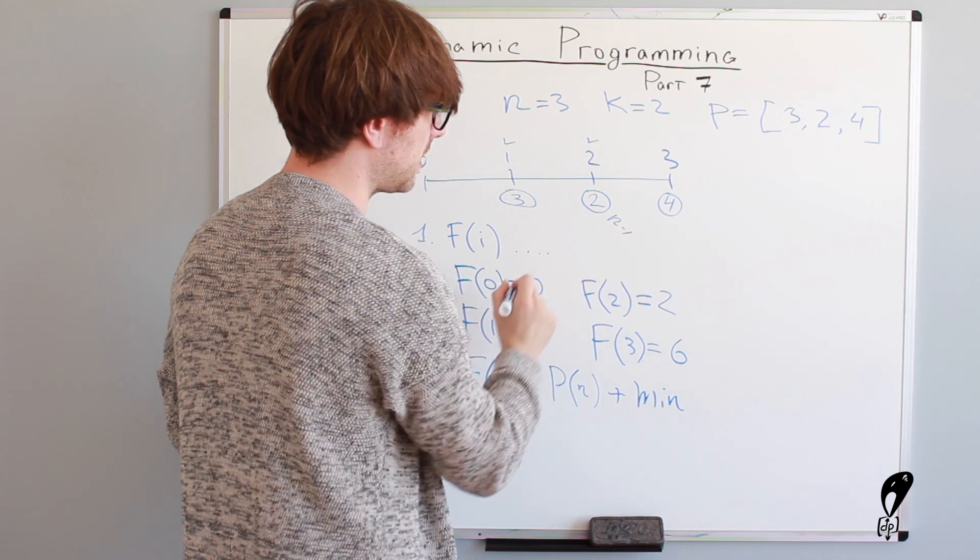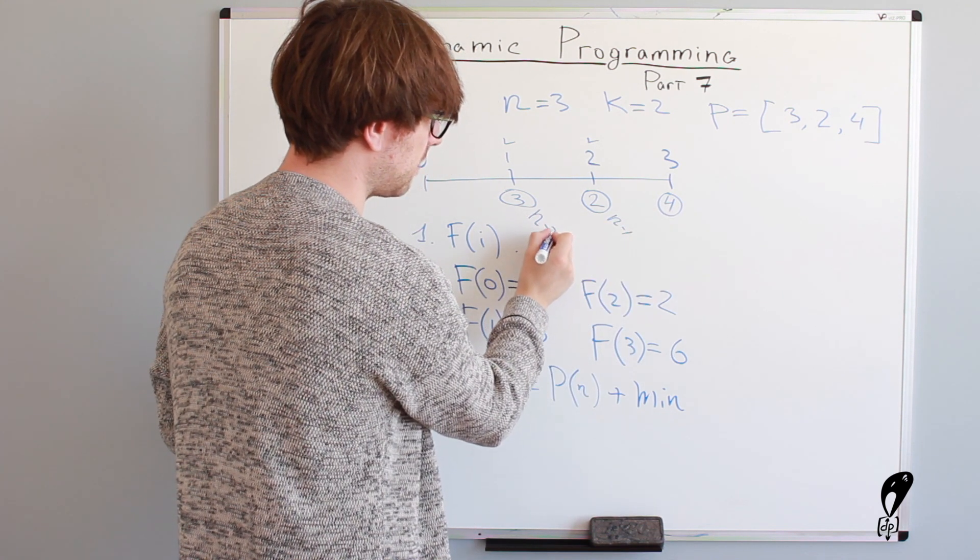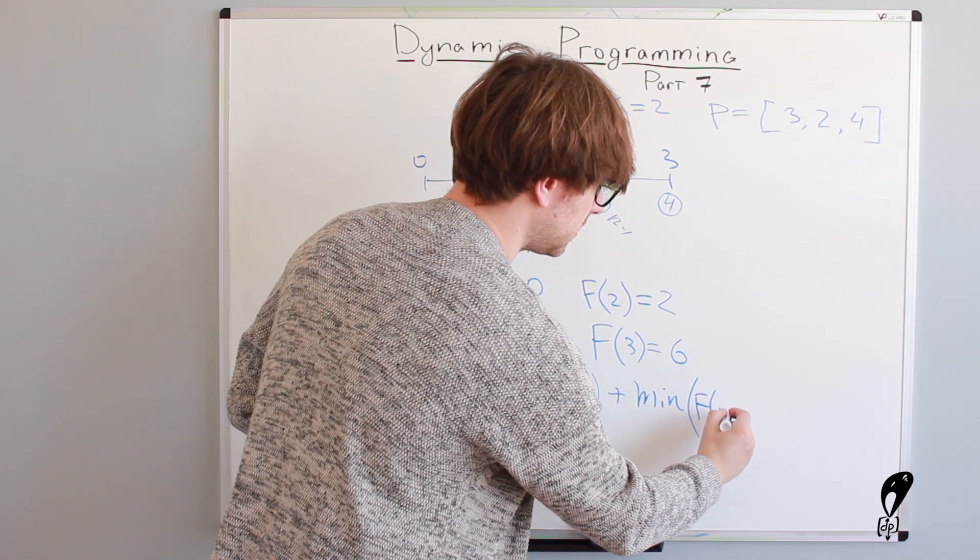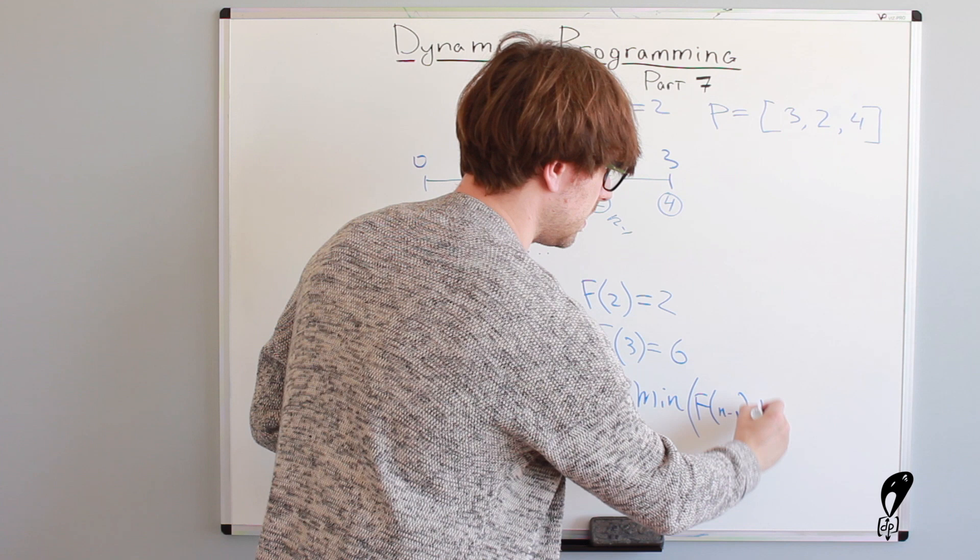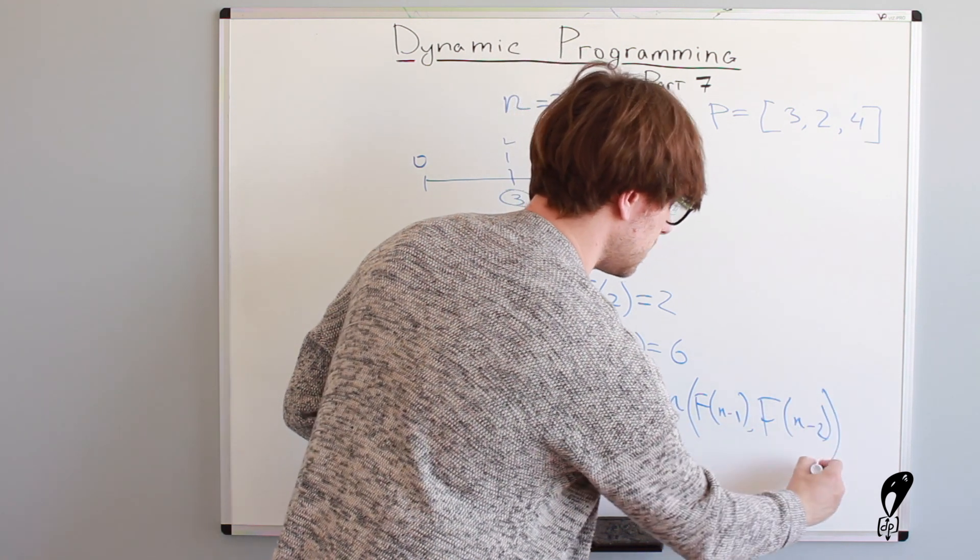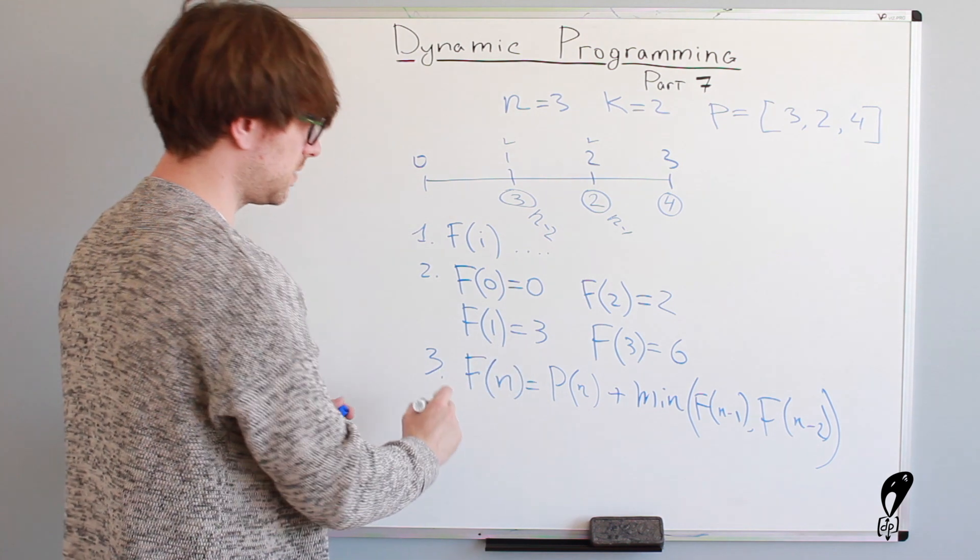So we'll say minimum between this is n minus one. This is n, and this one is n minus one, and this guy is n minus two. So we say f of n minus one, and f of n minus two. And this is the transition function that we are going to use.